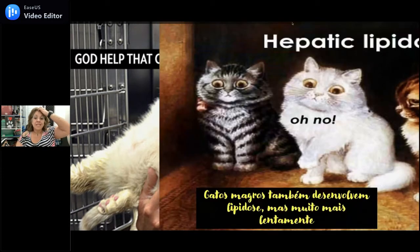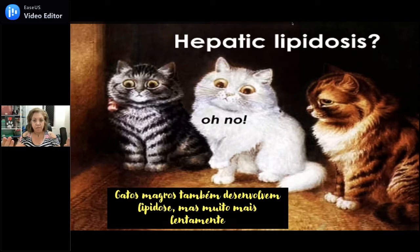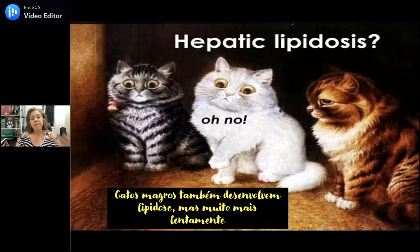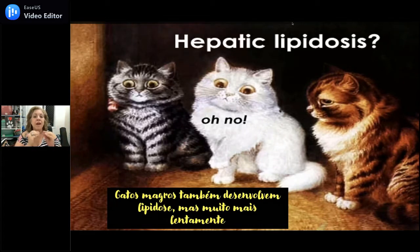Gatos magros estão salvos de ter lipidose? Não. O gato magro também tem massa gorda, só que muito menos. Se a gente pegar um magrinho e um gordão e colocar os dois em jejum ao mesmo tempo, os dois vão desenvolver lipidose. Só que o gordo quebra muito mais gordura porque tem muito mais gordura a fornecer para fazer gliconeogênese. O que o gordinho desenvolve em cinco dias, o magrinho desenvolve ao longo de três semanas. A palavra proibida para o gato é anorexia.